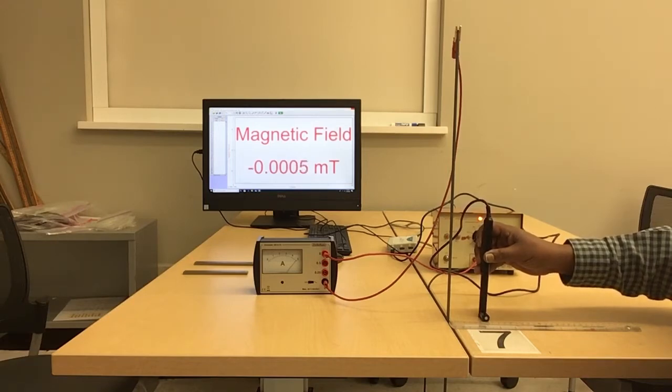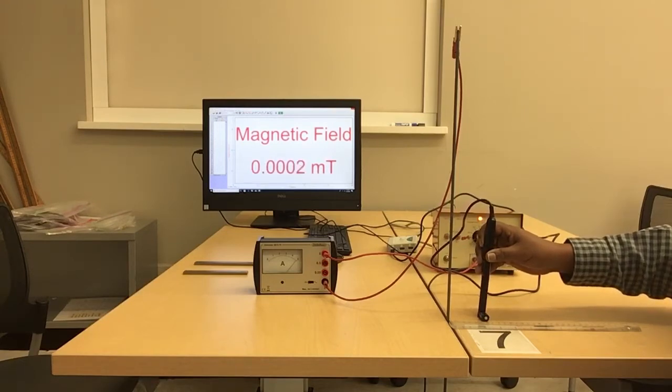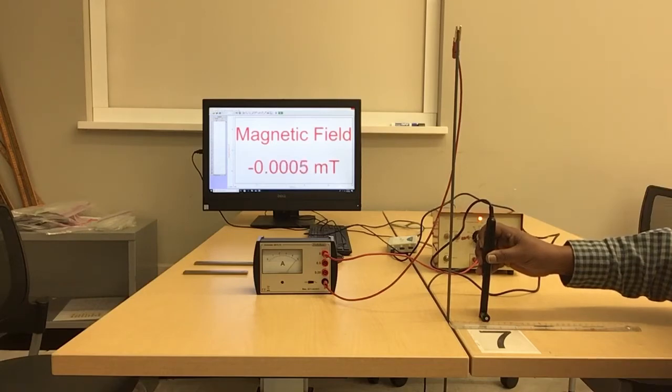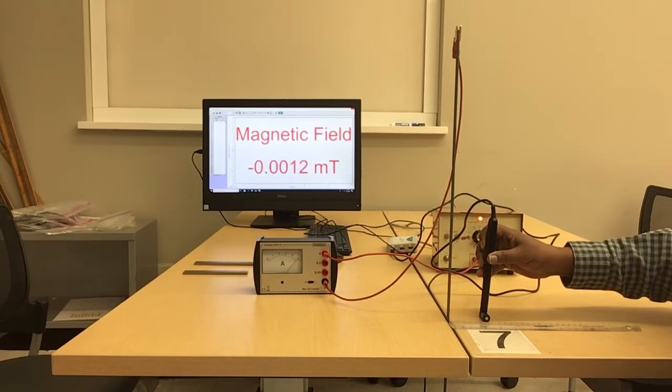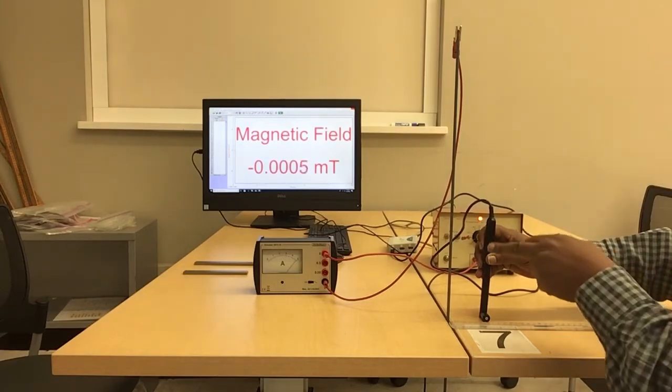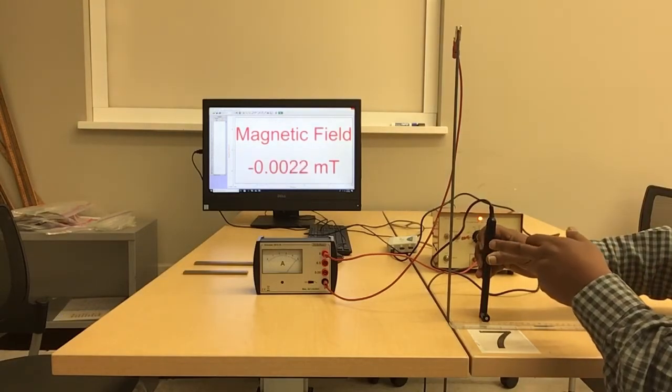Well that's almost zero or you get negative 0.001 and you need to explain why we get a negative value at this position. Remember we are measuring also the Earth's magnetic field superimposed on the magnetic field of the current passing through this wire.